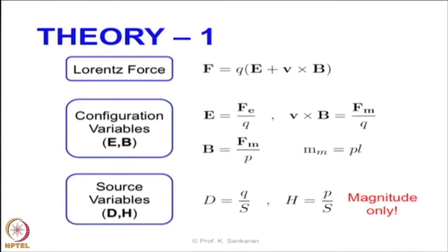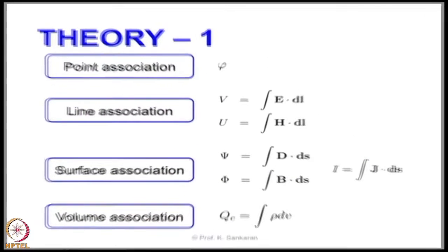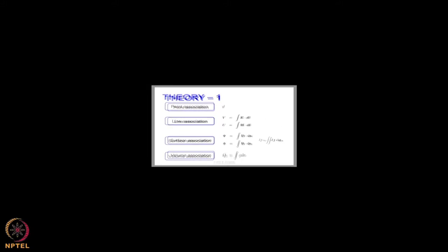We introduced the theory of algebraic topological method starting with the Lorentz force equation and defined the configuration and source variables involved in electromagnetic problems. We also discussed how these global variables are related to certain topological entities such as points, lines, surfaces, and volumes.